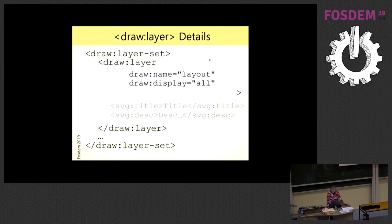Then we have an attribute display. It can have values all, screen, principle, and none. And so is a combination of the properties visible and principle from the user interface. And we have an attribute that corresponds to the locked attribute of the user interface.